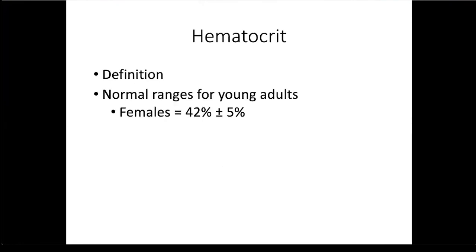The normal range for females is 42% plus or minus 5%. What this means is that it can be as low as 37% or as high as 47% in females. The normal range for males is 47% plus or minus 5%.